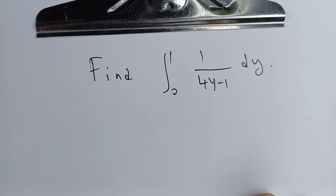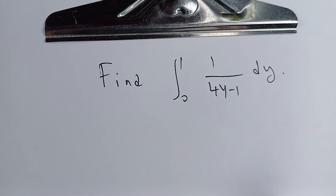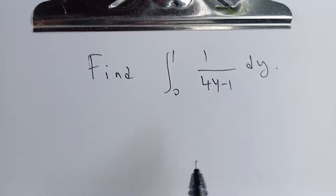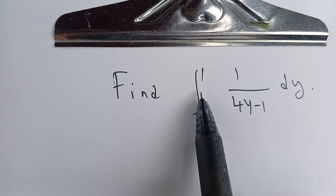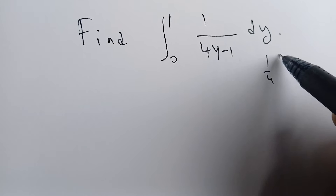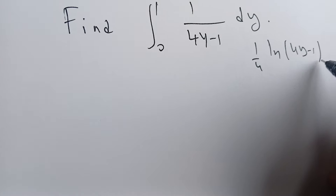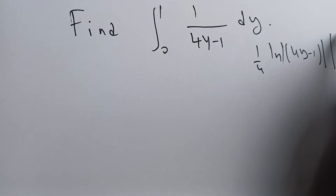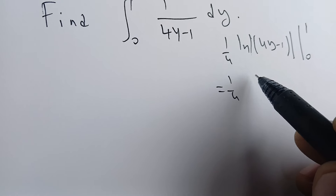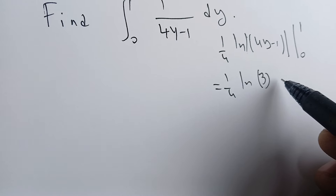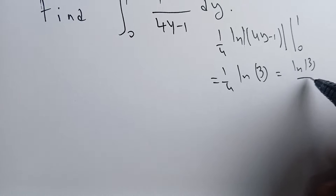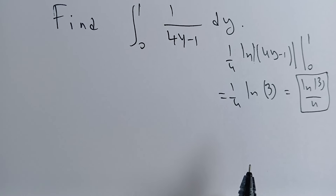When dealing with an improper integral of the first or second kind, we have to check the function first for any discontinuities. For example, if we just compute this one directly, we get 1/4 times the natural log of |4y - 1|, evaluated between 0 and 1, which gives us the natural log of 3 minus the natural log of 1, resulting in the natural log of 3/4. But this is wrong.